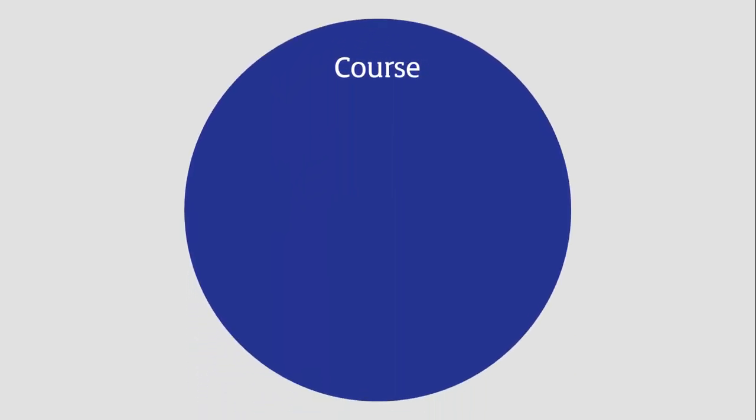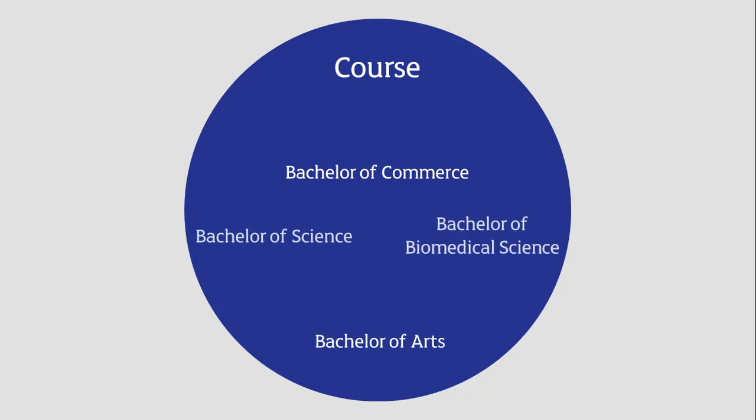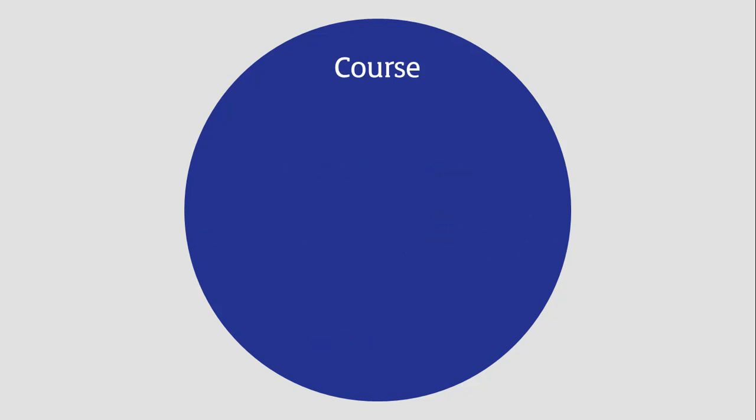Your course corresponds to the bachelor's degree that you're studying towards. For example, if you're studying towards the Bachelor of Commerce degree, you're enrolled in the Bachelor of Commerce course. Whether you're studying arts, science, or commerce, your course has a flexible structure which will allow you to explore a wide range of interests and develop your communication, research, and problem-solving skills.